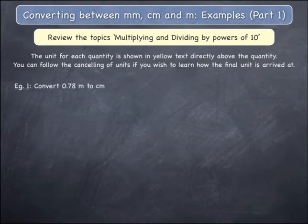Example 1. Convert 0.78 metres to centimetres. Since you are changing from metres to centimetres, you must multiply the starting quantity by 100.